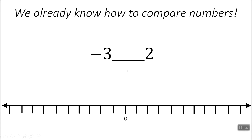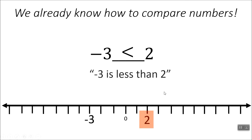Here's another one: negative 3 compared to 2. One way you can do this is to think the positive is always going to be the greater number. I'm going to put them on the number line and see that 2 is to the right — that's the one I'm going to want to eat. So I'm going to put my munchie mouth going this way. But when we read this, this is really a less than symbol. So negative 3 is less than 2.